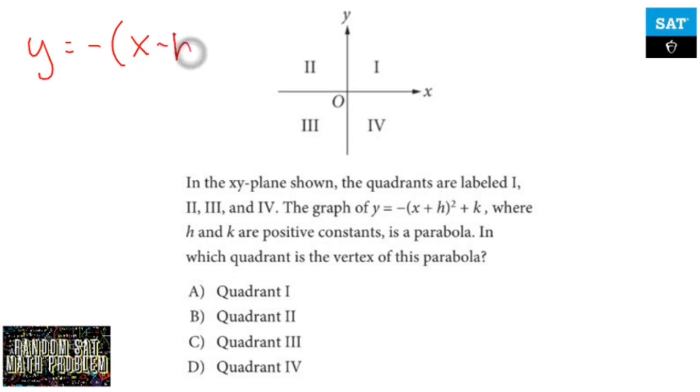Vertex form is y = (x - h)² + k. That's vertex form where (h, k) is your vertex.